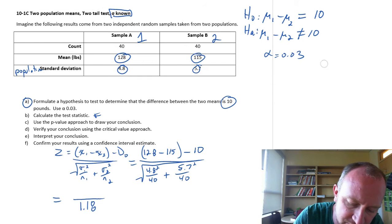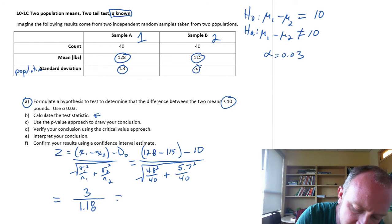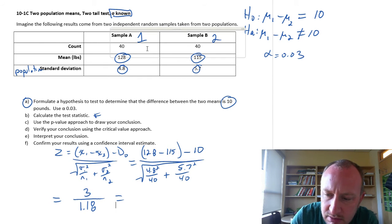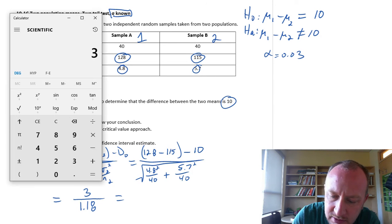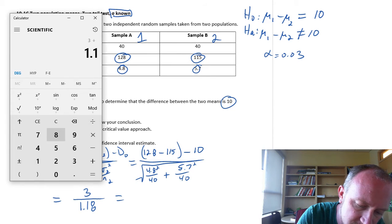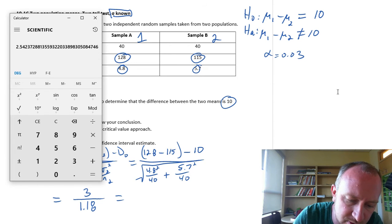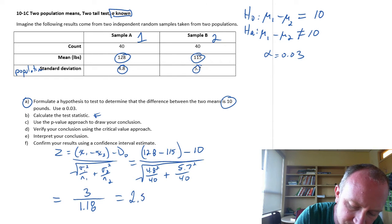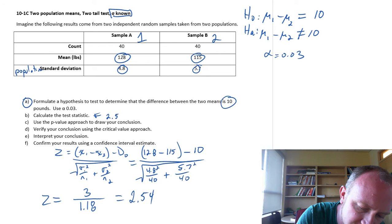And the numerator, this is going to be 128 minus 115 minus 10. That's 3. Now 3 divided by 1.18 is 2.54. So there's my z value, 2.54.